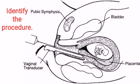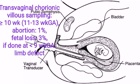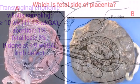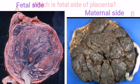Identify the procedure: Transvaginal Chorionic Villus Sampling. Which is the fetal side of placenta? Answer: A.